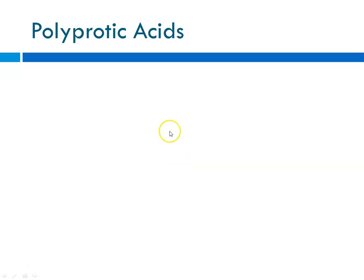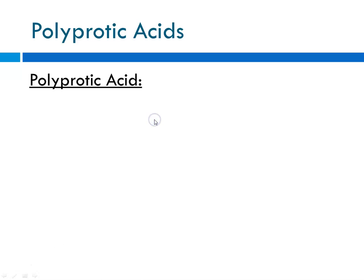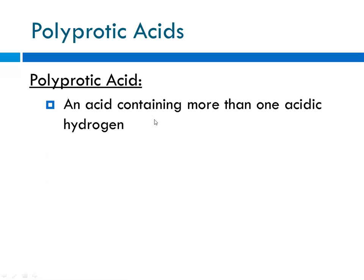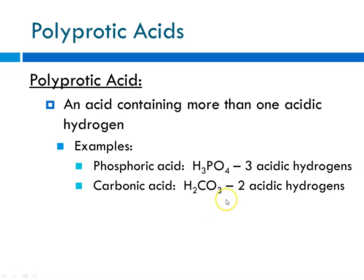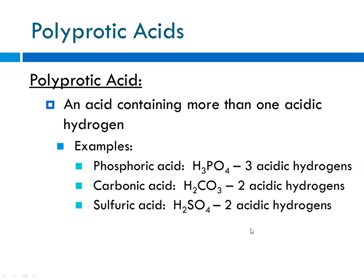Since we're talking about donating H-pluses, we have to take a little break and discuss what a polyprotic acid is — "protic" meaning proton. Anything that has more than one proton would be considered a polyprotic acid — any acid that contains more than one acidic hydrogen. Examples would be phosphoric acid, H3PO4, which has three acidic hydrogens; carbonic acid, which has two acidic hydrogens; and sulfuric acid, which also has two acidic hydrogens.